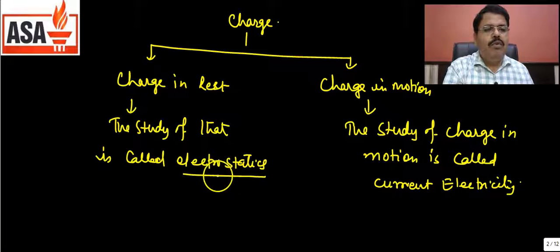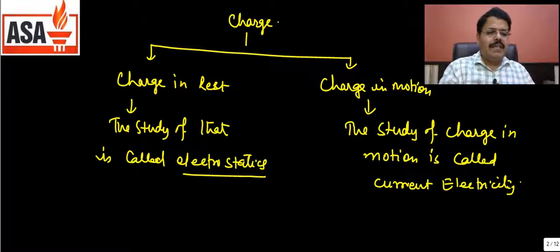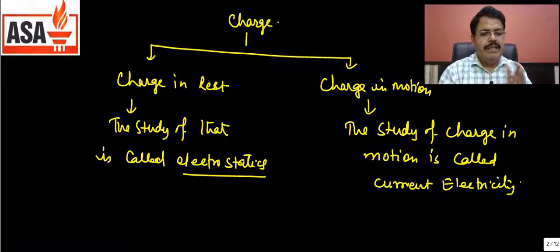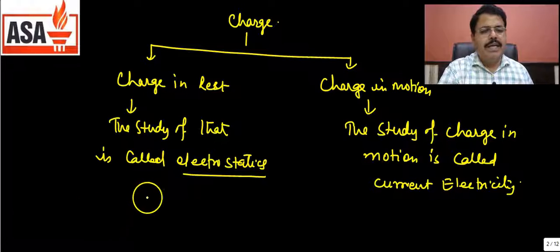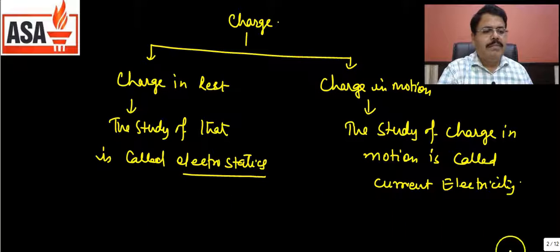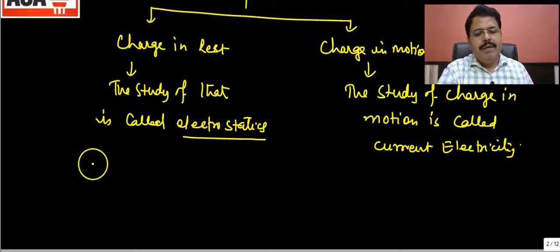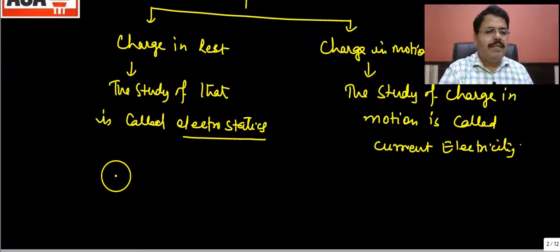There is no loss of charges. From one substance to the other, whether charge transfer happens by friction, chemical reaction, or other means, charge is always conserved. This is called conservation of charges — conservation of charges. There is no creation or destruction of charges.